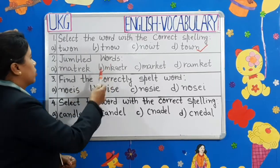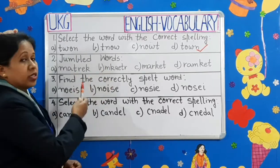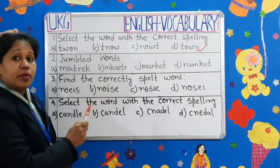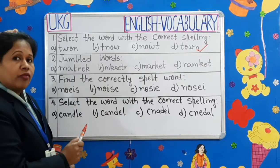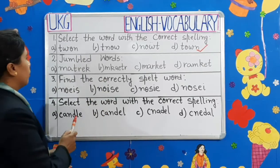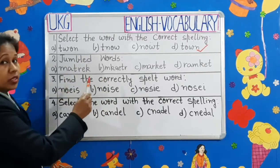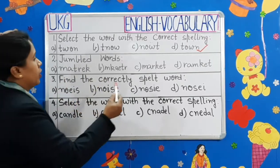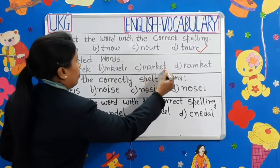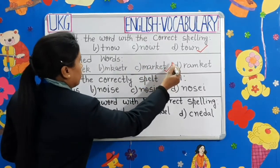Question number 2: Jumbled words. Here, you can see children, all the letters are jumbled. You have to find the correct answer. Which one is correct? Yes, children — M-A-R-K-E-T. Mark it.